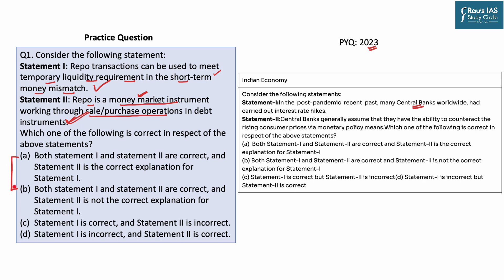If both statements are correct, any option between A and B could be correct. But if statement 2 is the correct explanation of statement 1, then option A is correct; if not, option B. Repo or repurchase options is a money market instrument under which RBI provides money to banks against securities or debt instruments. These securities are promised to be taken back by the banks, and when they take back their securities, they return the money to RBI along with the repo rate attached to the sum borrowed. Based on this discussion, the answer is option A.